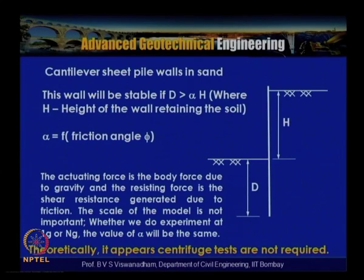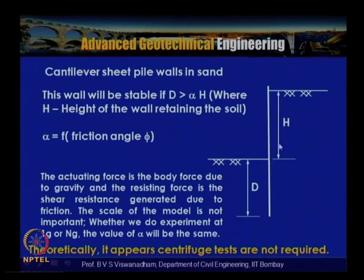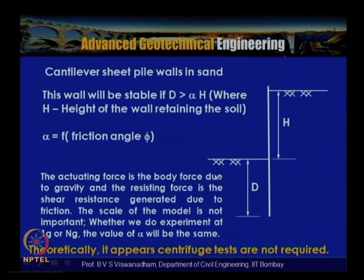Let us take cantilever sheet pile walls in sand. The wall has a retaining height h and embedded depth d, with d being the depth below the dredge surface. The wall will be stable if d is greater than alpha times h, where alpha is a function of friction angle phi and h is the retaining height.